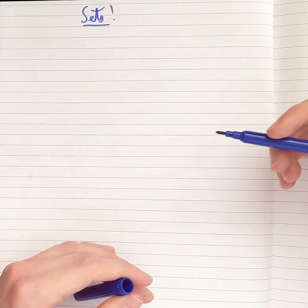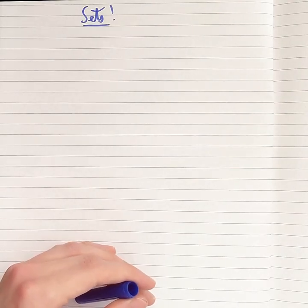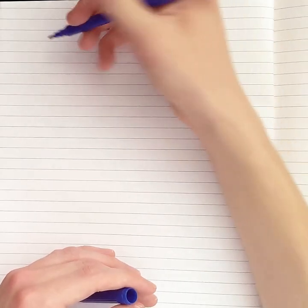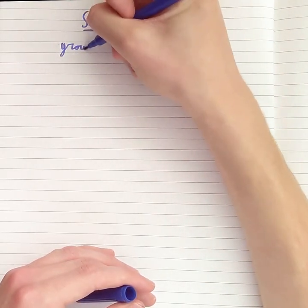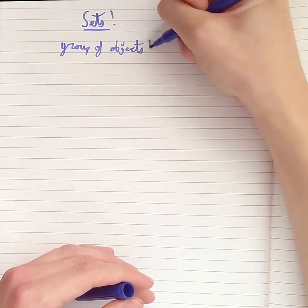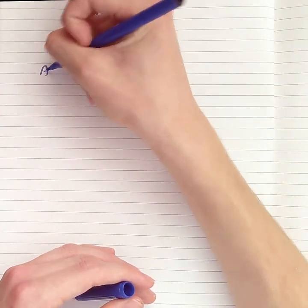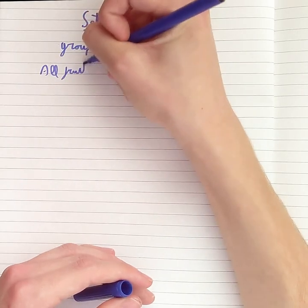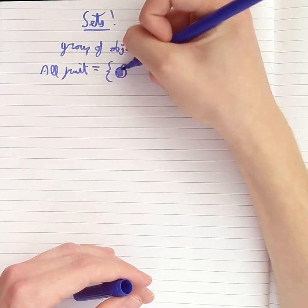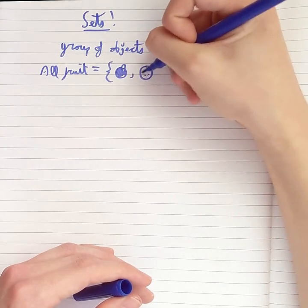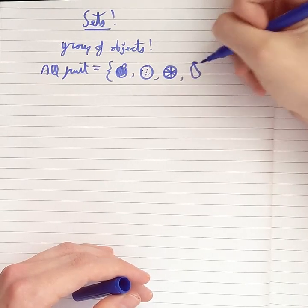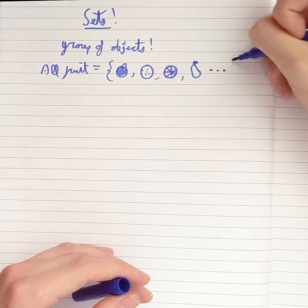Let's begin with the definition of a set. Just thinking about the word set in English, you normally think of it as a group of objects. And that's a pretty good definition for now. We can say something like all fruit is a set — so that would be stuff like apples, an orange, a lemon, and a pear, and every other type of fruit.